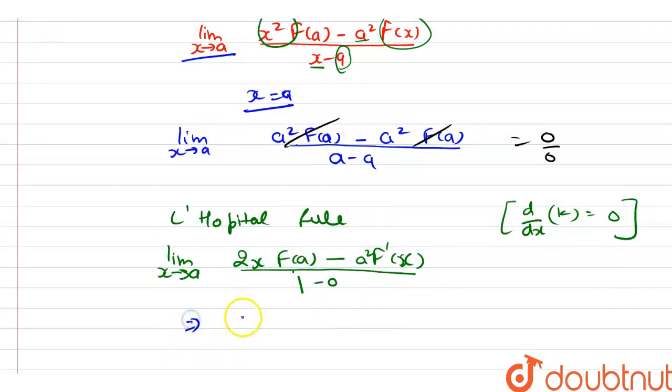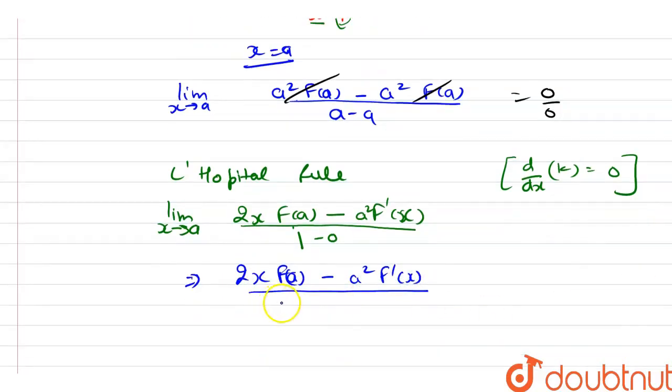So from here, we got the value that is 2x f(a) minus a squared f'(x), or we don't need to write whole divided by 1. And this is our value.